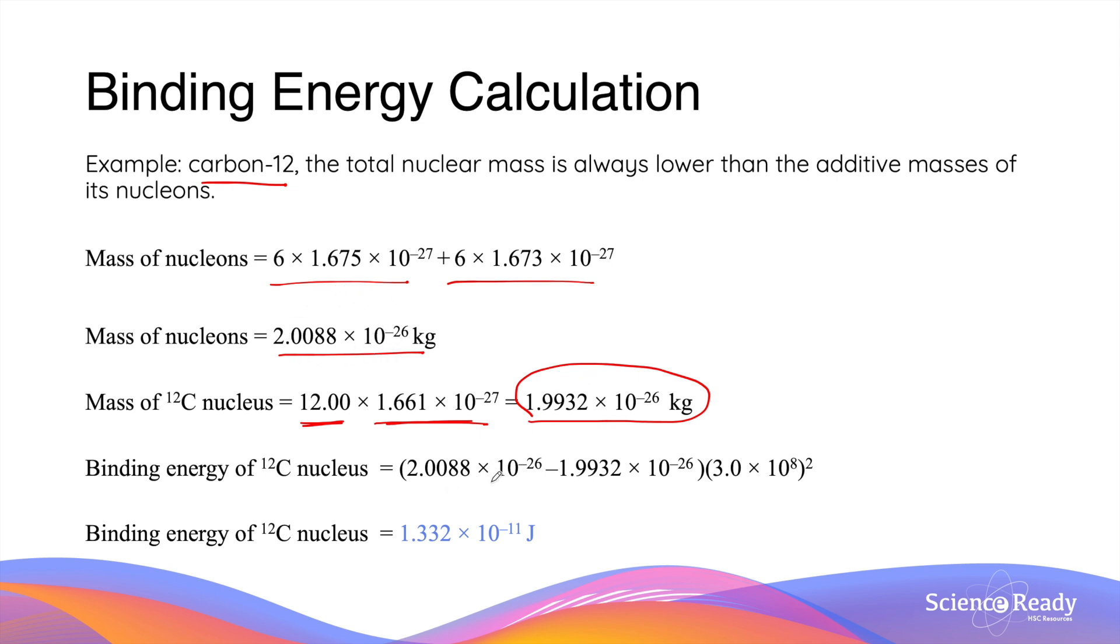So if we find the mass defect by subtracting and finding the difference between the two masses, and multiplying this by the speed of light squared, we can then calculate the binding energy of the carbon-12 nucleus in joules.